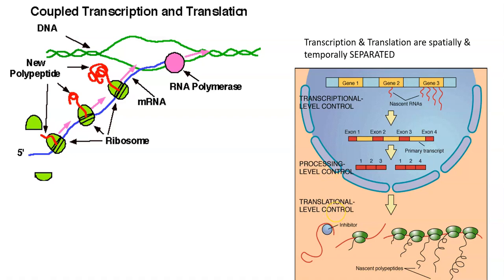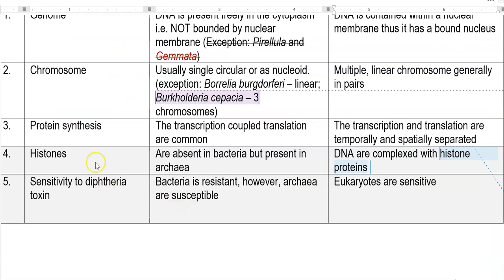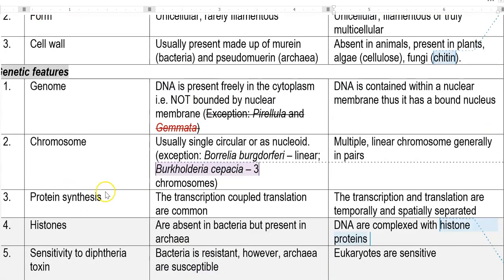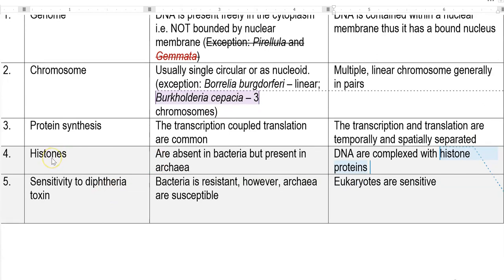They take place at separate spaces and separate times — transcription occurs first, and translation is performed by ribosomes at a later time. The next important difference between prokaryotes and eukaryotes at the level of genetic features is histones.